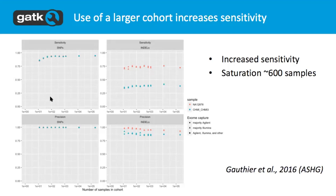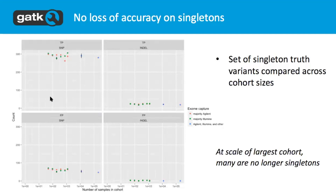Here are some results showing that the paradigm of joint calling does not reduce our sensitivity or specificity. It actually helps up to about 600 samples, and then we saturate and don't see much further increase - but it doesn't hurt us. It also does not hurt us for very rare variants; for singletons - variants that occur only once in your entire population - the detection of those variants is not impacted by using joint calling.